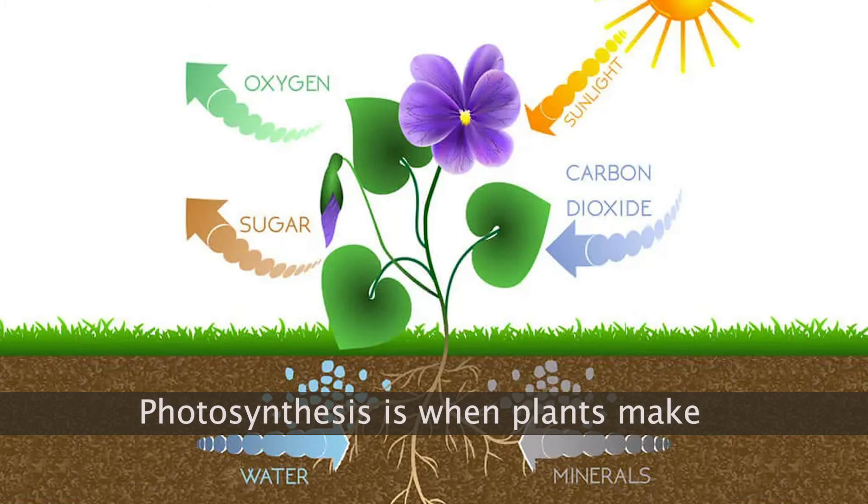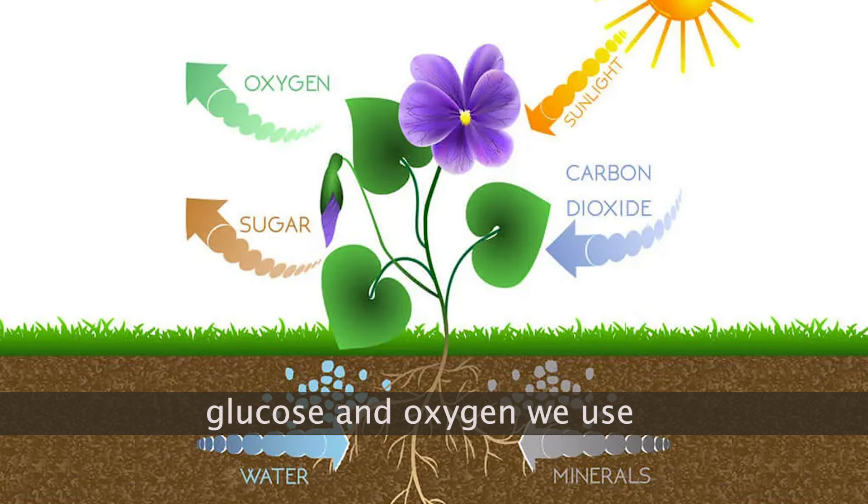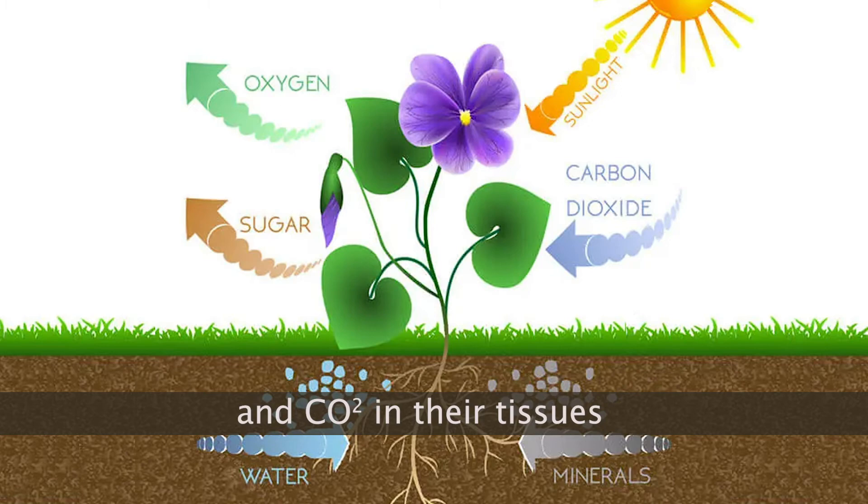Photosynthesis is when plants make glucose and oxygen we use. They process sunlight with water and CO2 in their tissues.